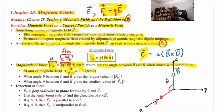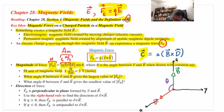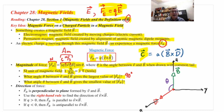What angle theta between V and B gives the largest value of |F_B|? Theta must be 90 degrees, because it all depends on sine theta — 90 degrees gives the largest sine. What angle gives the smallest |F_B|? Zero, because the sine of zero is zero. Or 180 degrees — if V and B are exactly opposite, that also gives no magnetic force.